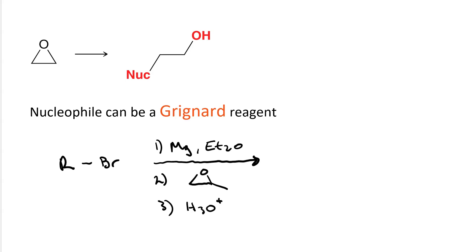Consider the outcome of this reaction sequence. An alkyl halide is first treated with magnesium in diethyl ether. The result of that is reacted with 2-methyloxirane, and that result is worked up in acidic conditions.